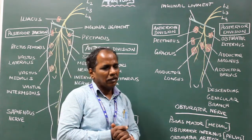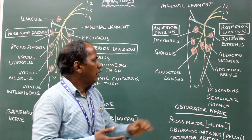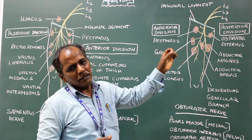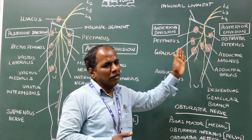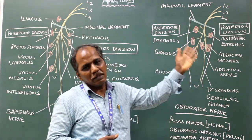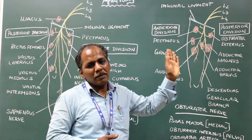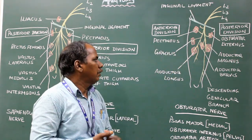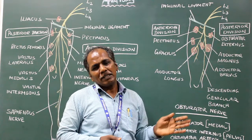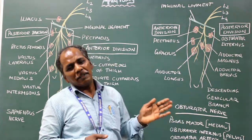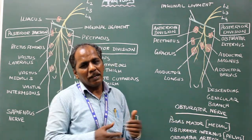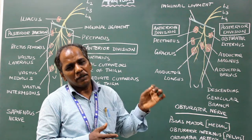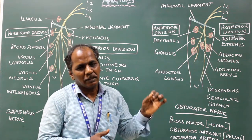Applied anatomy: injury to the obturator nerve results in paralysis of the adductor compartment muscles, or the medial compartment muscles of the thigh. This results in difficulty in adduction of the thigh, or loss of adduction of the thigh.